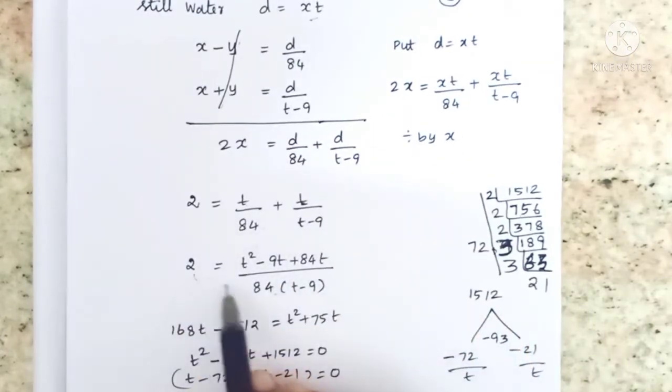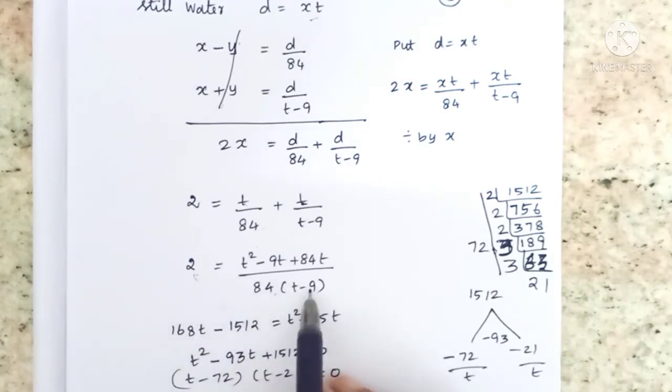Cross multiplying: t squared minus 9t plus 84t divided by 84 times t minus 9. This equals 2 into 84, which is 168. 168t equals t squared plus 75t. So 168t minus t squared minus 75t equals 1512.